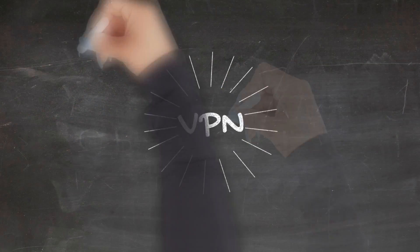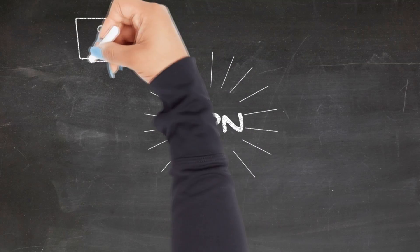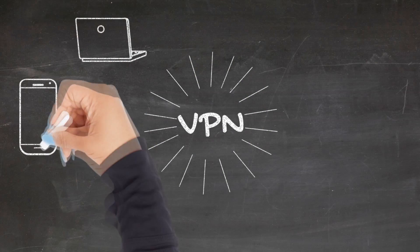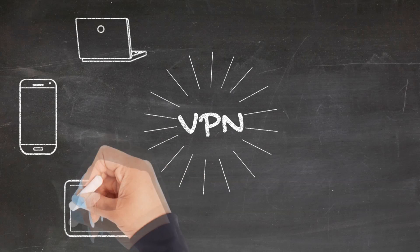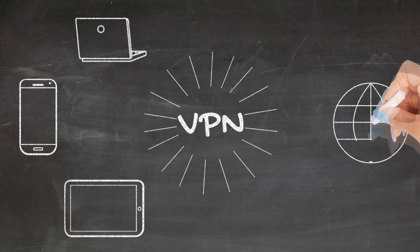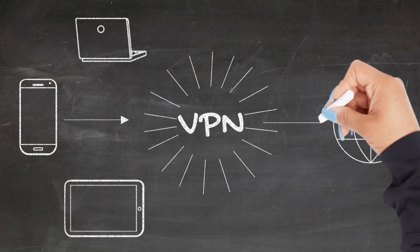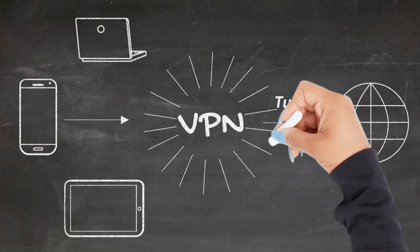So what happens after you install and run your VPN app? It connects to a VPN server run by your VPN provider, and all data into and out of your device is now securely encrypted and routed through this VPN tunnel. The VPN server acts as a gateway between you and the internet — it prevents your ISP (internet service provider) from seeing what you're doing on the web, and prevents websites from seeing who you are and targeting you with ads.